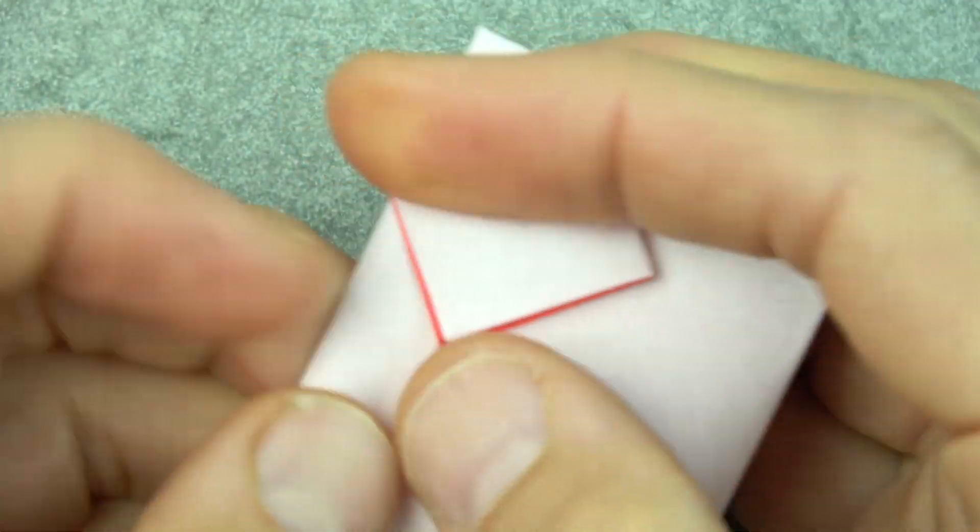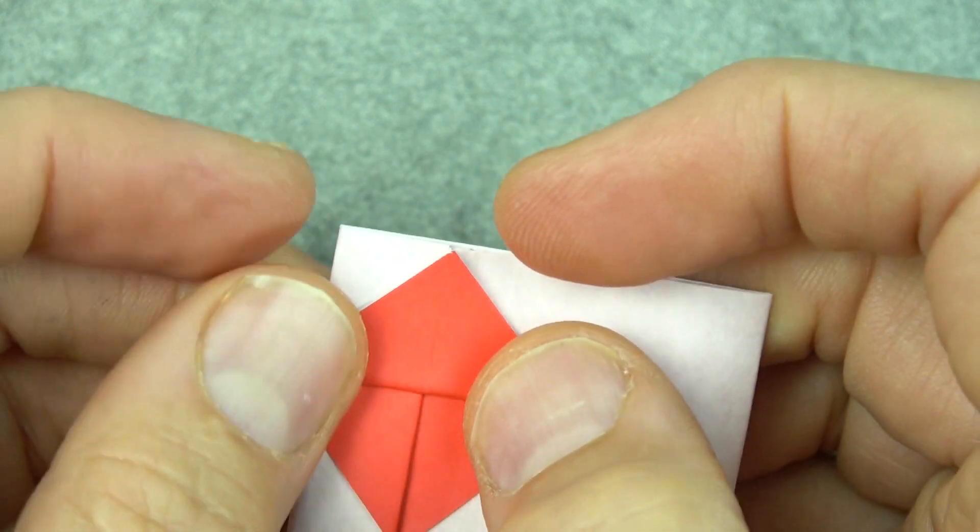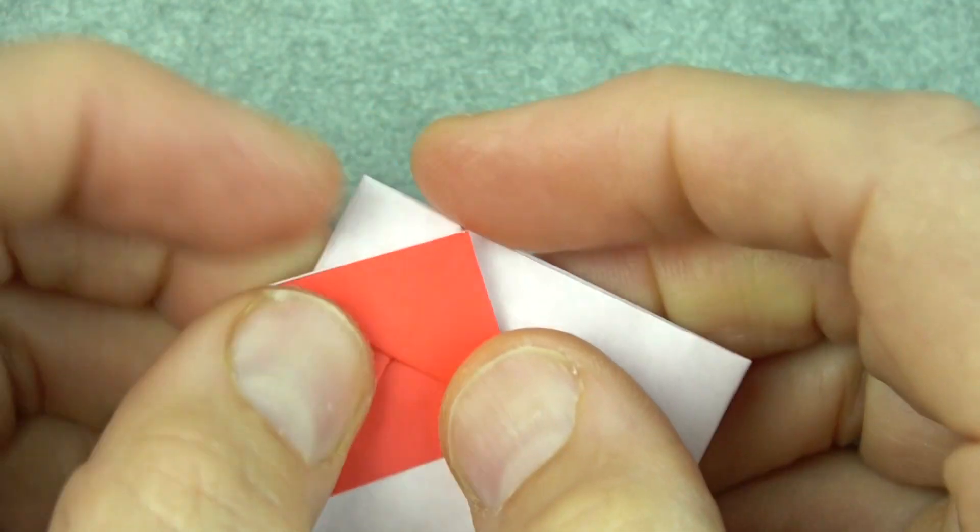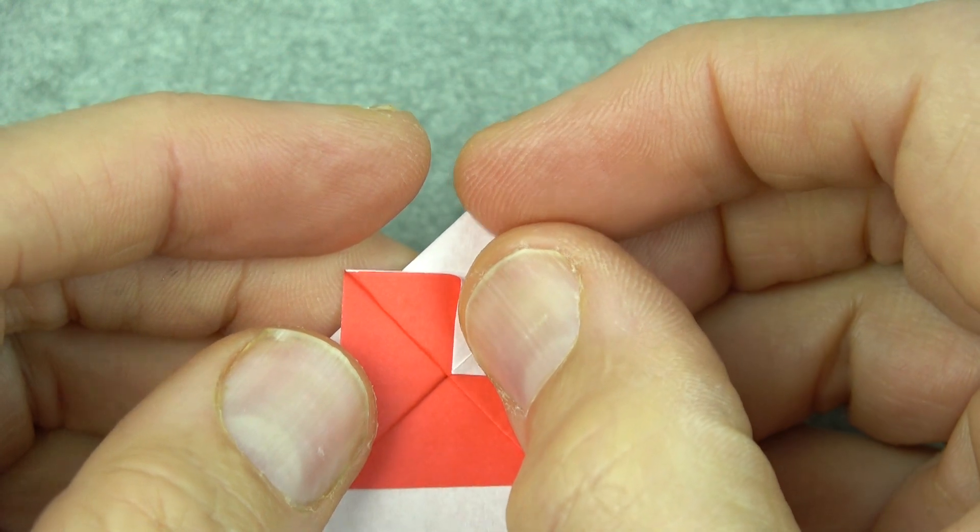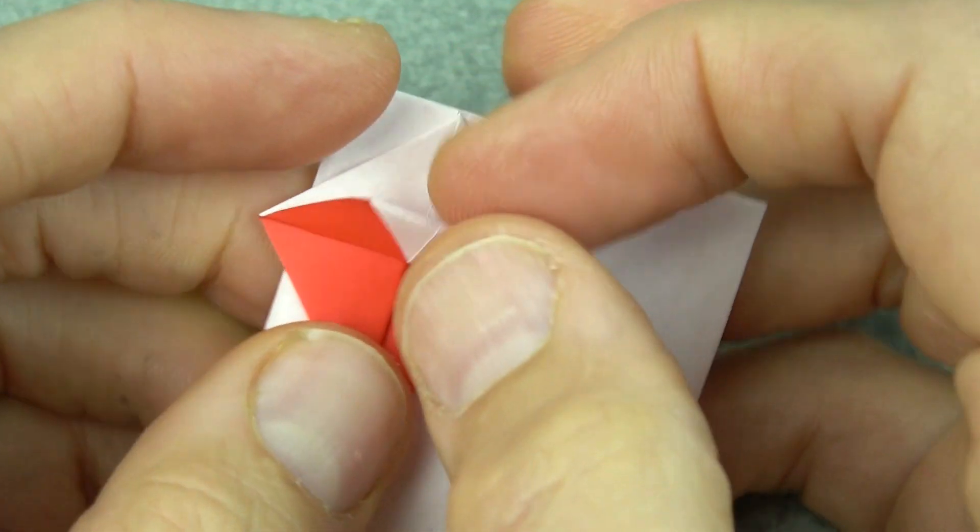And now fold this flap up like this and fold the corner to the middle of the square. And there's an abstract card, let's round it.